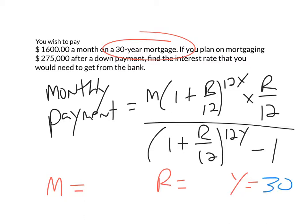And the money that you're mortgaging, here the question says you plan on mortgaging $275,000 after a down payment. M is always the value that you get after you subtract the down payment from the price of the house. So here they're telling you that's how much money you want to mortgage.